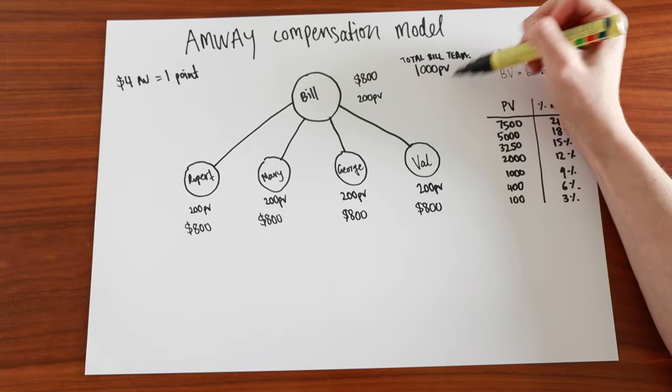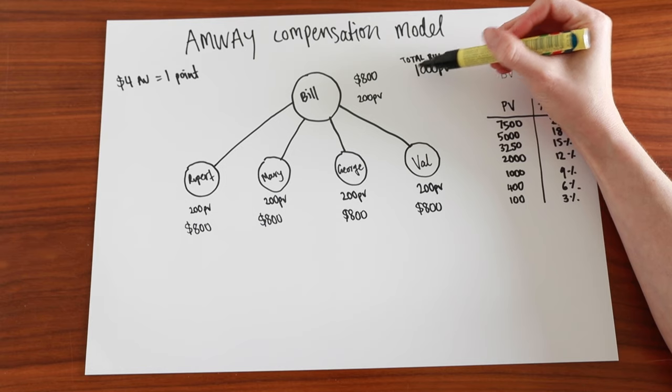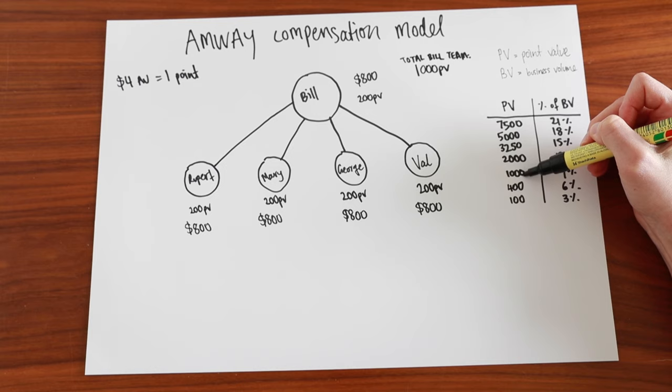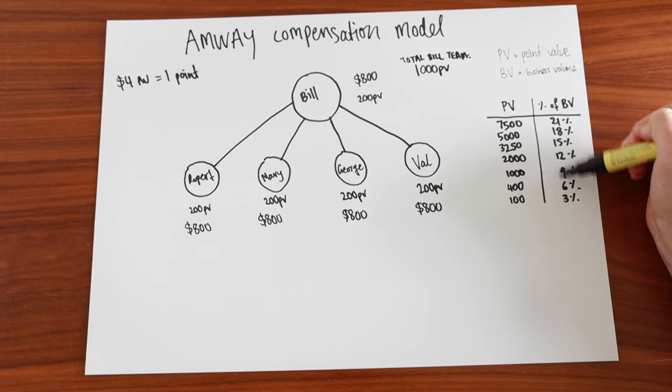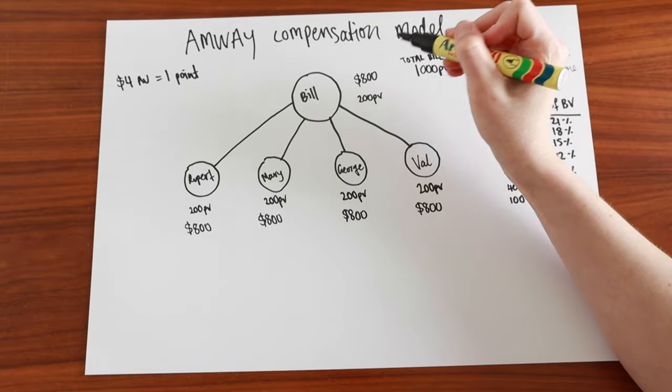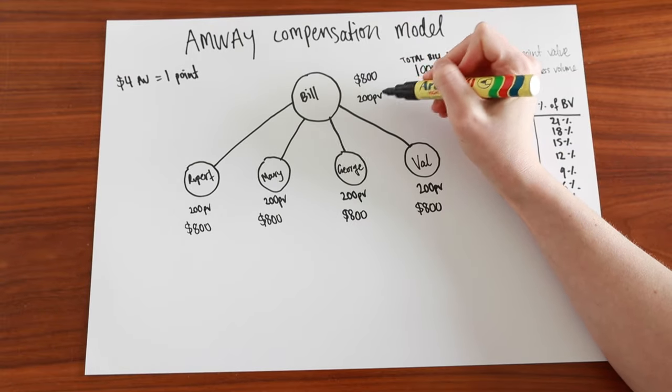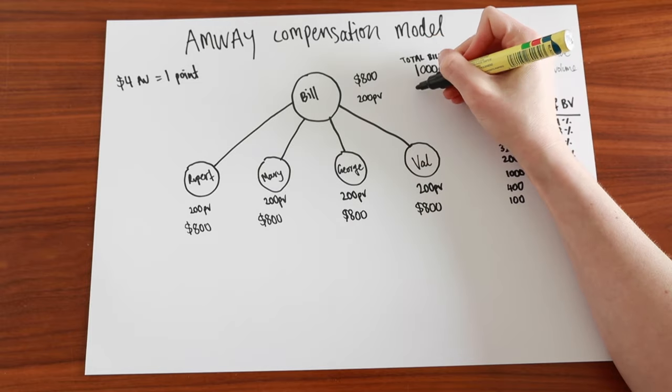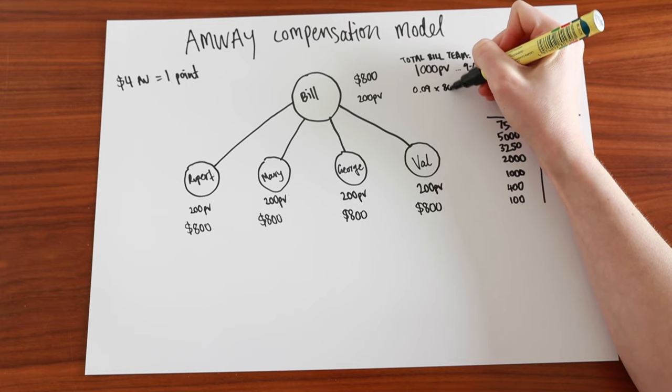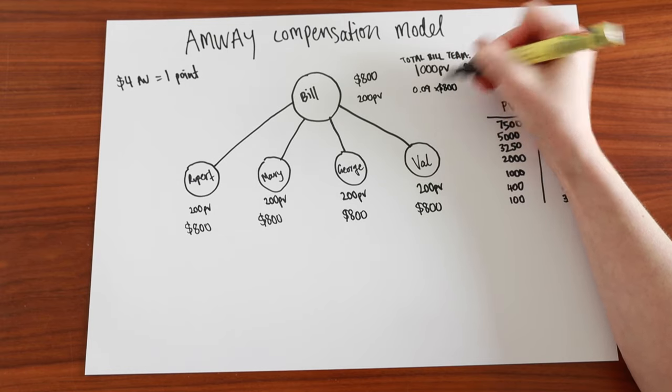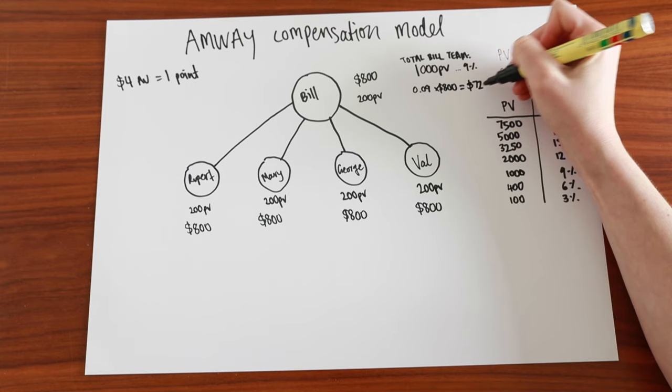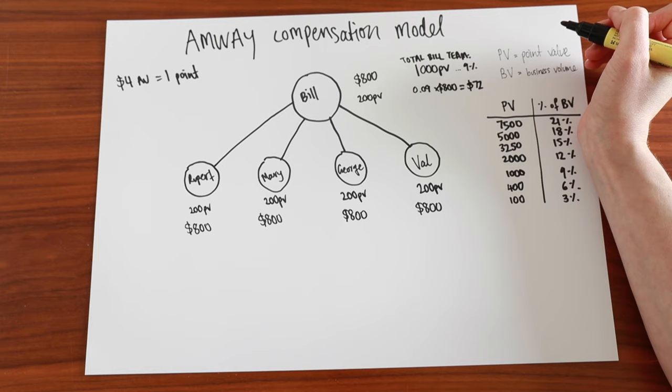So because his total team spends 1000 PV, you go to this table here and see what he qualifies for. So Bill qualifies for 9% back. So Bill will get 9% of his own spendings back. So 9%, 0.09 times $800 is $72. You can calculate that if you want.